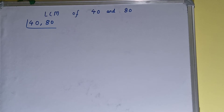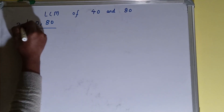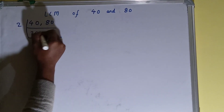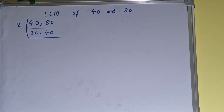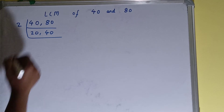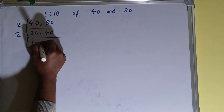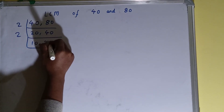Both numbers can be divided by 2, so we'll divide. On dividing, 40 becomes 20 and 80 becomes 40. Again we check: both numbers can be divided by 2, so we divide again — 20 becomes 10 and 40 becomes 20.